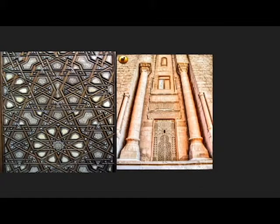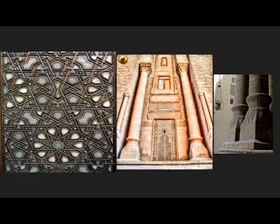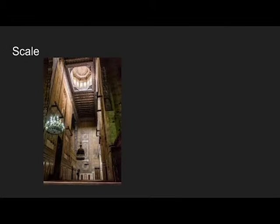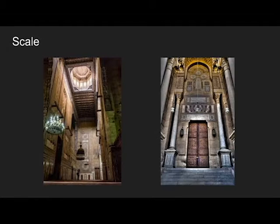Emphasis of blue and gold paint against neutral backgrounds creates a stronger presence. Harmony is seen through the seamless use of materials. The scale of the building is very grand — the ceilings are tall, the hallways are wide, and the entranceways have large-scale doors as well.